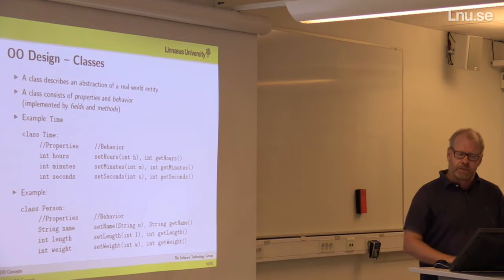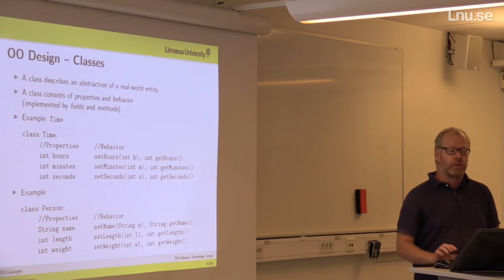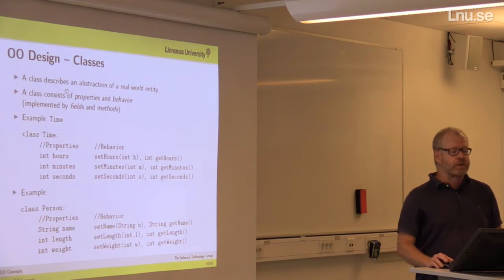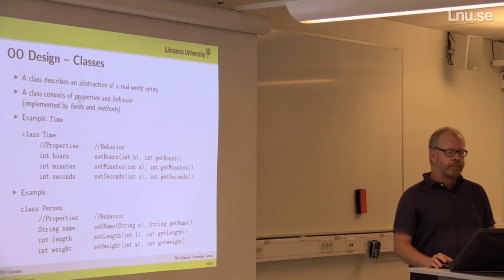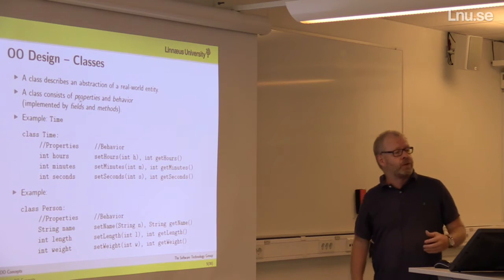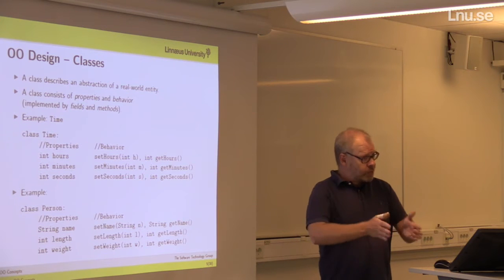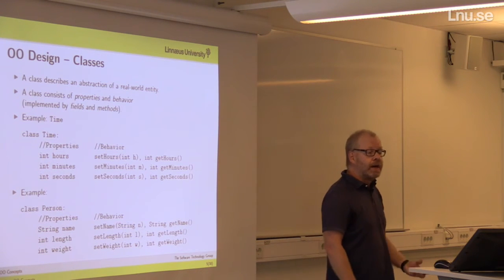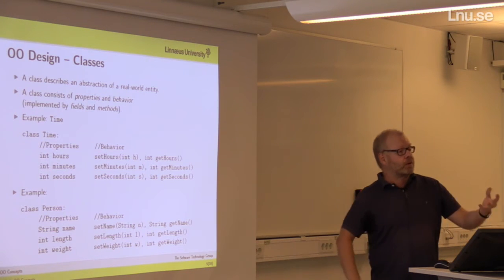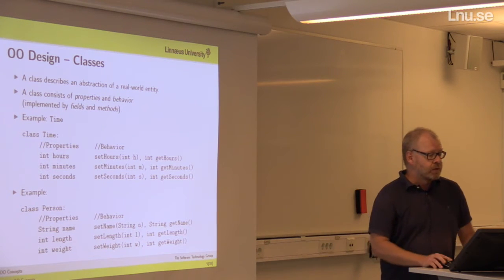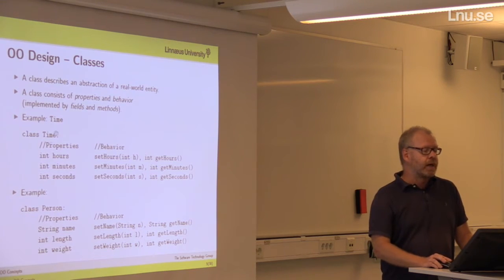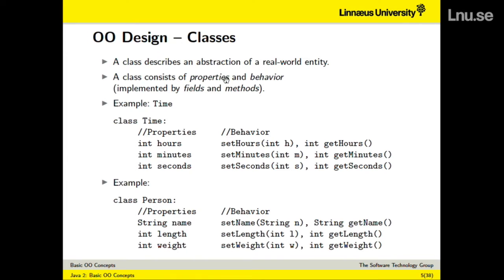A good class describes something — a real-world entity — but in order to be manageable, we must do an abstraction. You will see that classes consist of properties and behavior. Properties are the data that comes with it — for example, a student comes with their address and ID number. The behavior is what we can do with it: we can update the grades. In a class, we have fields that describe the data and properties, and we have methods that describe what we can do with the class or with an object.